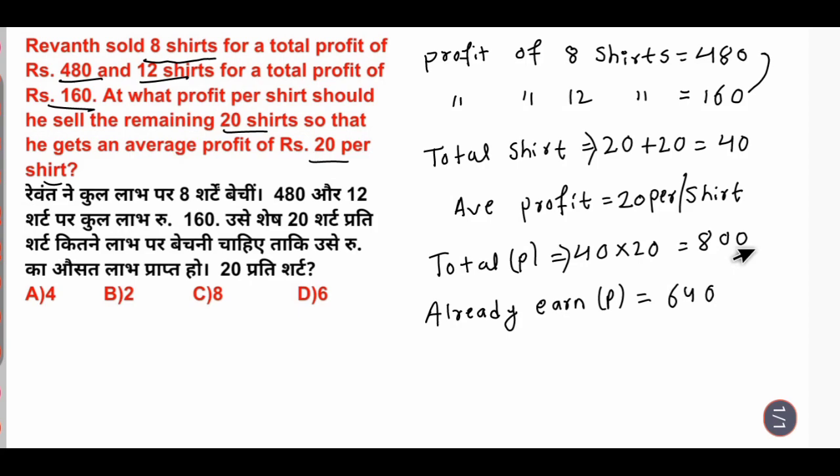So how much is it? 160. Remaining shirts 20. Cancel 0, 0, 20 to 2, 8 per shirt, required profit share 8 per shirt.